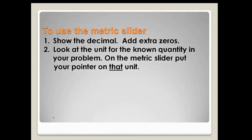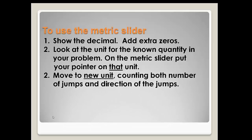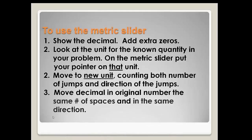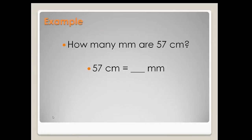Then you're going to look at the unit for the known quantity in your problem. So if you're going from centimeters to millimeters, the known quantity is centimeters. You're going to put your pointer on centi. Then you're going to move to the new unit. In this case, we're moving from centi to milli. And we're going to count both the number of jumps and the direction that we go. And then we're going to move our decimal in the original number, the same number of spaces and in the same direction as we moved our pointer on the metric slider.